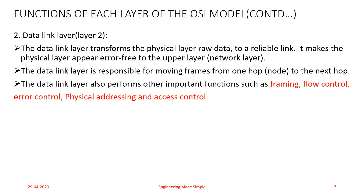A transmitter is sending data frames at a higher rate than the receiver, which is tuned to receive at a much slower rate. If there is a transmission rate mismatch between sender and receiver, the flow control mechanism is used to correct that.